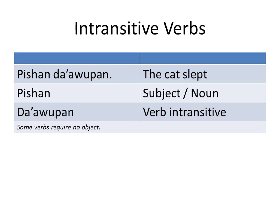Intransitive verbs: Bishan da'awupan — the cat slept. Bishan is the subject; da'awupan is the verb, intransitive. Some verbs require no object, such as 'to sleep.'